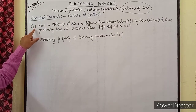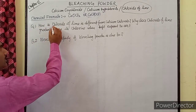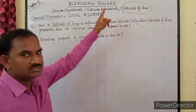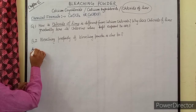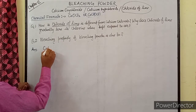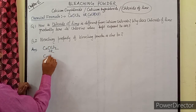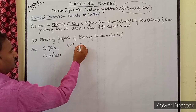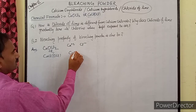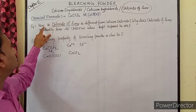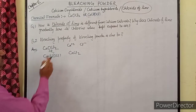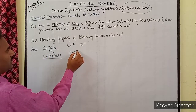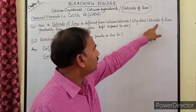अब दो बहुत important questions हैं जो bleaching powder से पूछे जाते हैं। पहला question है: How is chloride of lime different from calcium chloride? Chloride of lime यानी bleaching powder का formula है CaOCl₂ या Ca(Cl)(OCl)। जबकि calcium chloride — Ca की valency +2 और chloride की valency -1 — तो calcium chloride का formula है CaCl₂। इस तरह chloride of lime CaOCl₂ chemically calcium chloride CaCl₂ से different है।